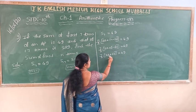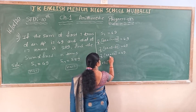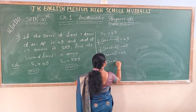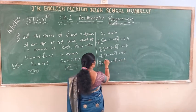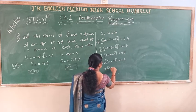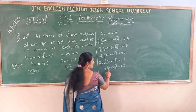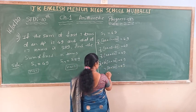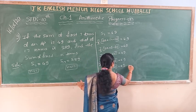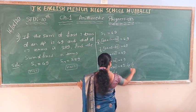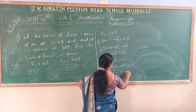I can take 2 as common from 2A plus 6D: 7 by 2 into 2 into A plus 3D is equal to 49. The 2s cancel, giving 7 into A plus 3D is equal to 49. Dividing both sides by 7, A plus 3D is equal to 7. Call this equation number 1.